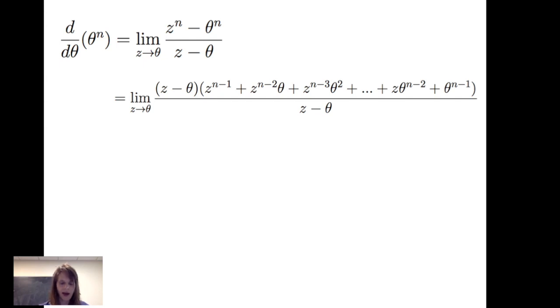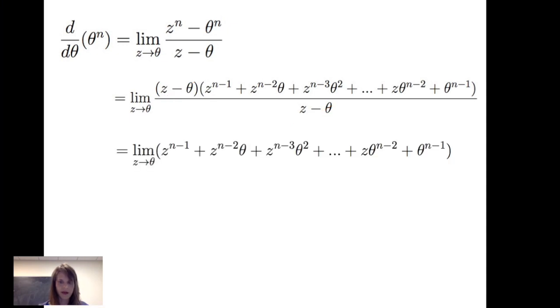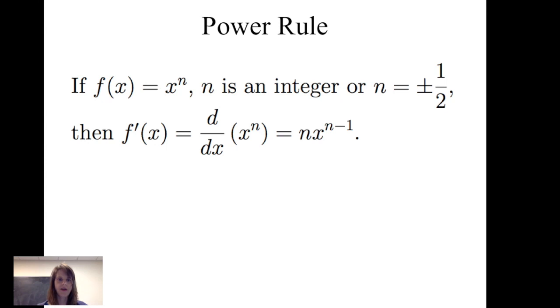Let's generalize. If I have theta to the nth power, the limit as z goes to theta of z to the n minus theta to the n all over z minus theta — I can factor that numerator and cancel z minus theta. Evaluating the limit gives n times theta to the n minus 1 as the derivative of theta to the n. This leads to the power rule: if f of x equals x to the n, where n is an integer or plus or minus one half, then the derivative of x to the n is n times x to the n minus 1. In other words, bring the power down as the coefficient and subtract 1 from the power.